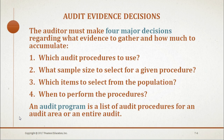An audit procedure is the detailed instruction that explains the audit evidence to be obtained during the audit. An example of an audit procedure would be to examine the cash disbursement journal in the accounting system and then compare the payee name, amount, and date with the online information provided by the bank about checks and electronic transfers processed for that particular account.